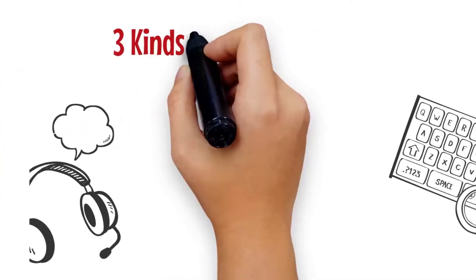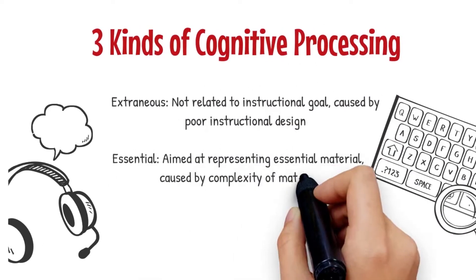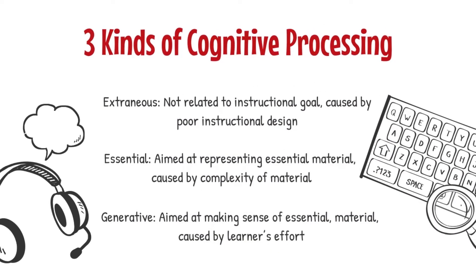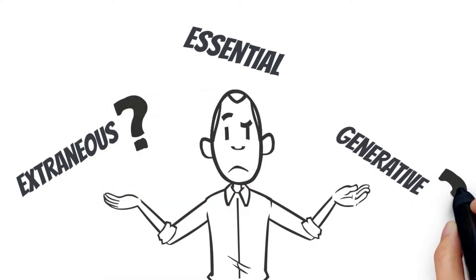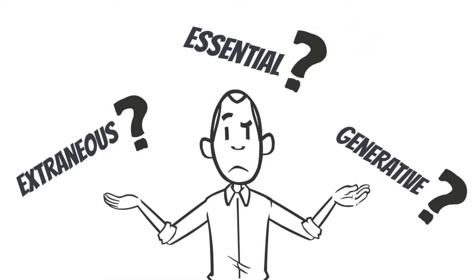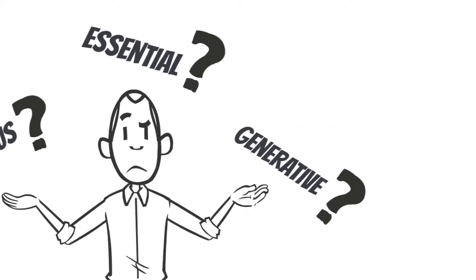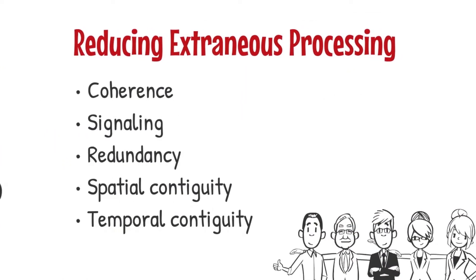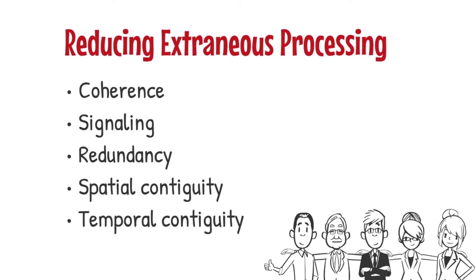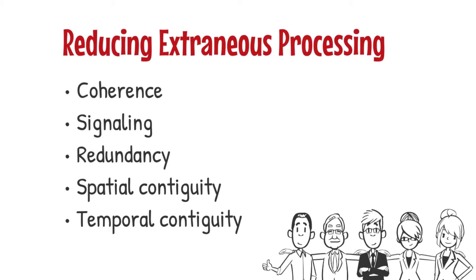There are three kinds of cognitive processing in total, which are extraneous, essential, and generative. After taking a quick look at each description, I believe you are still confused about what they are. Don't worry — today we will focus on the first part, reducing extraneous processing, which contains coherence, signaling, redundancy, spatial contiguity, and temporal contiguity.